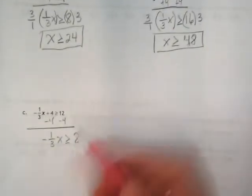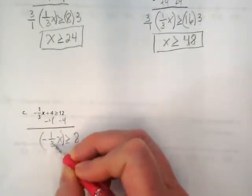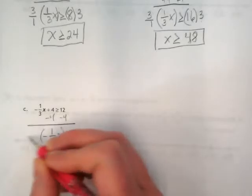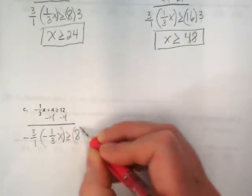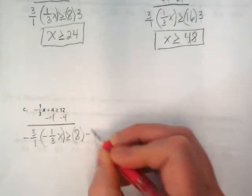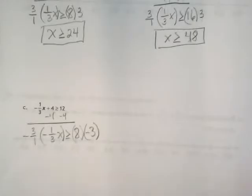I'm going to multiply by the opposite of negative 1 third. The opposite of that is negative 3 over 1. That means on the right side, I'm multiplying also by negative 3, which really is negative 3 over that invisible 1. Again, negative times negative gives us our positive, and it's an invisible 1.